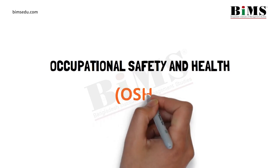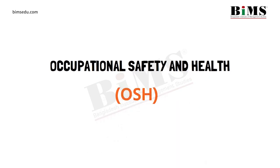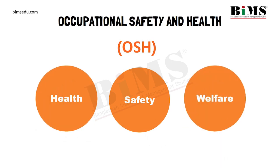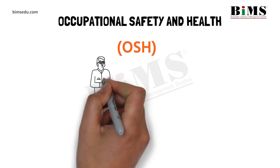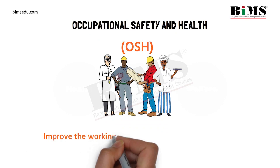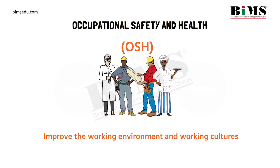Occupational Safety and Health, OSH, is a multidisciplinary field concerned with the safety, health, and welfare of people at work. The objective of OSH is to maintain and promote workers' health and well-being at the workplace. The goal is to improve the working environment and working cultures that will support health and safety of the workers.